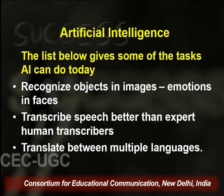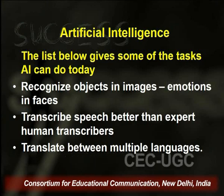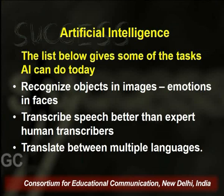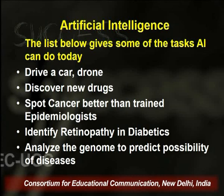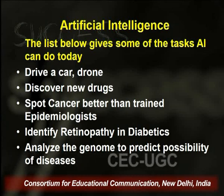Let us also understand what is possible in artificial intelligence right now. AI can easily recognize faces, images and emotions, and it can transcribe speech. Some of you may have used ChatGPT — it can convert audio to text, text to audio, and translate into different languages. You must also be aware of self-driven cars, which are being tested on roads right now. In three to five years this will become a reality, at least in the US, and in India maybe a couple of years later.